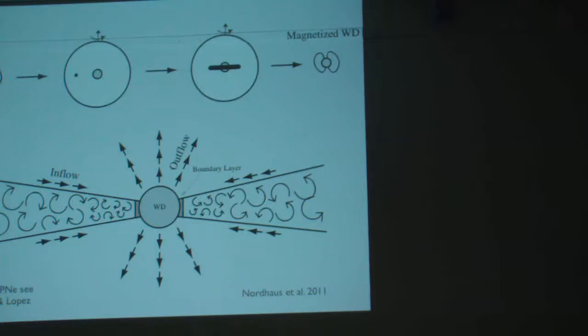What could happen when they do that is the companion inspirals when the star becomes a giant. It starts to spiral inward, and if the companion is low enough mass that it can't halt that process, it gets really close to the proto-white dwarf core, and then it gets tidally disrupted by the gravity of the white dwarf core.